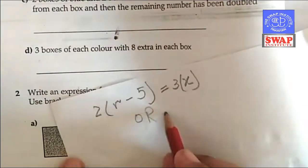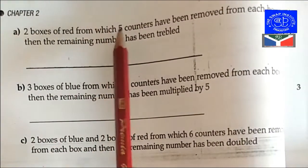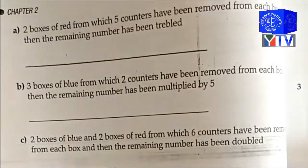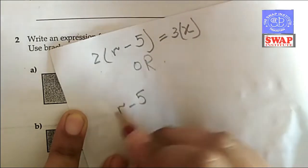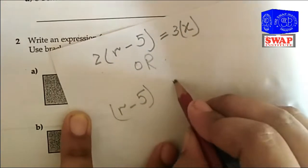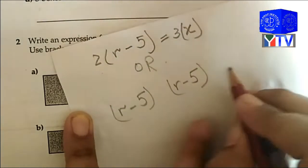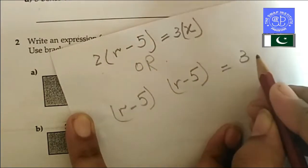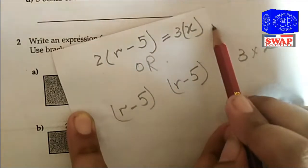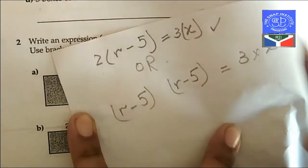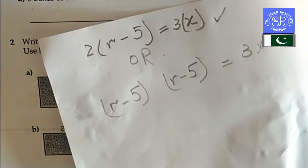You can write the same question in another way. They said 2 boxes of red, and 5 counters have been removed from each box, so it will be (r minus 5) for box 1, then (r minus 5) for box 2, and the answer is 3 into x. Either form is acceptable — it's the same and it doesn't matter a lot.